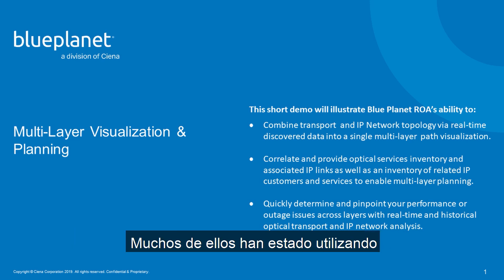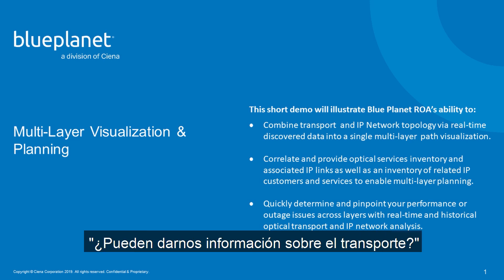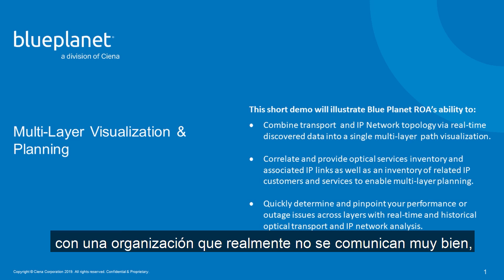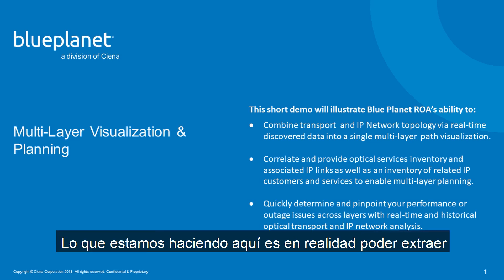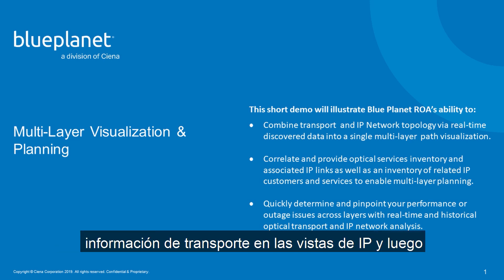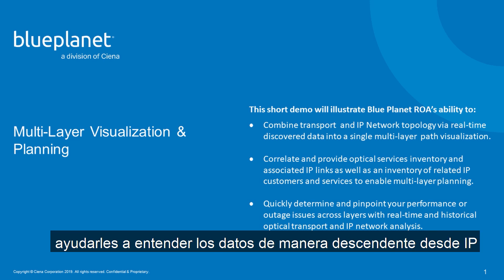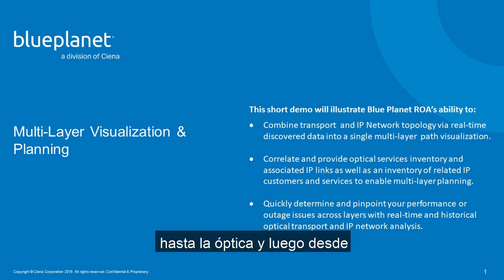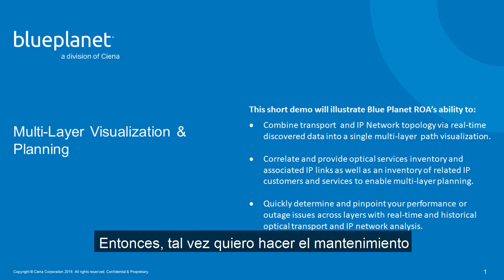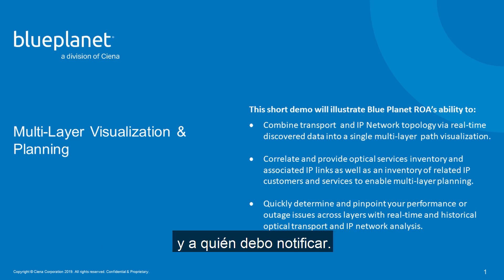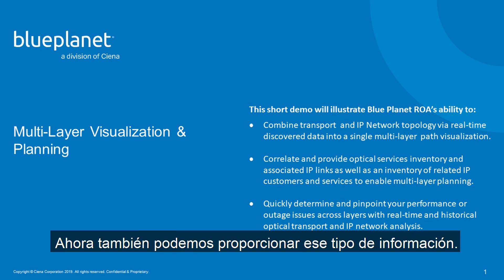Many of them have been using our Layer 3 products for years, and they've always been asking: can you give us insight into the transport? Many times there are two different teams within an organization that don't really communicate that well — they're kind of in two different silos. What we're doing here is pulling the transport information into the IP views, providing a top-down view from IP down into the optical and from the optical up into the IP. So maybe I want to do maintenance on a transport link and understand what IP services would be impacted and who I need to notify — we can now provide that information as well.